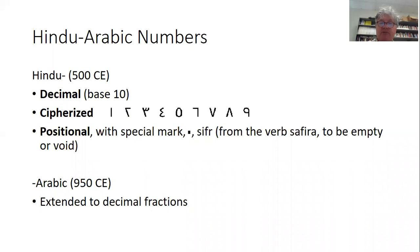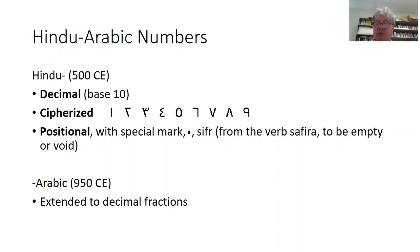These were first developed in India around 500 AD. There's a famous Indian mathematician around 475, and while he wasn't using them, his student Bhaskara the First was using them at the beginning of the sixth century. The key way to describe these numbers is that they are decimal, cipherized, and positional.